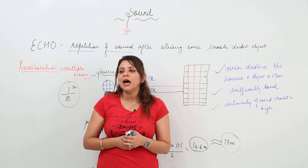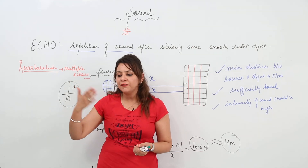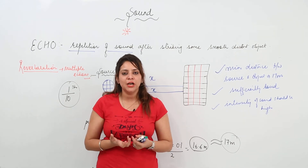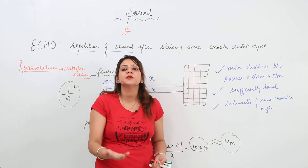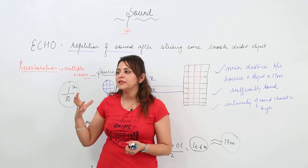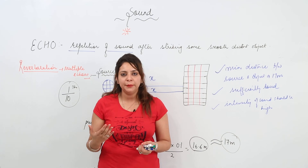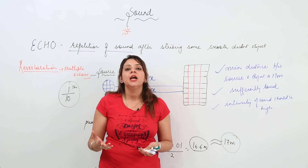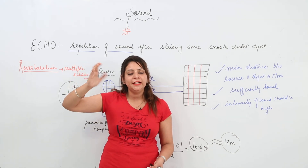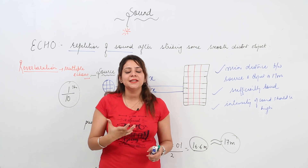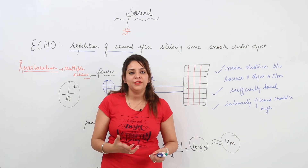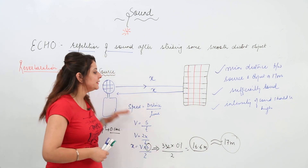We can reduce reverberation. For example, in an auditorium, multiple reflections of sound mean you won't be able to hear the speaker clearly. To reduce reverberation, we can use sound-absorbing materials, curtains, and carpets. We can also make the ceilings slightly curved, which helps absorb sound so there are no multiple echoes and the original sound is heard clearly.